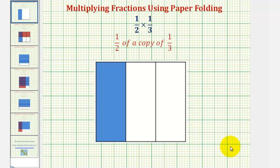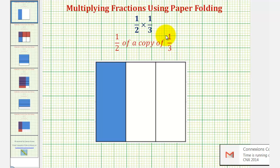Welcome to a lesson on multiplying fractions using paper folding. In our first example, we have one-half times one-third, which means we want half of a copy of one-third. So begin by modeling the fraction one-third, and we'll assume one sheet of paper equals one whole.